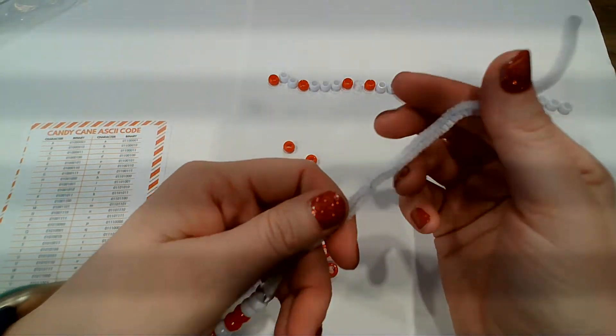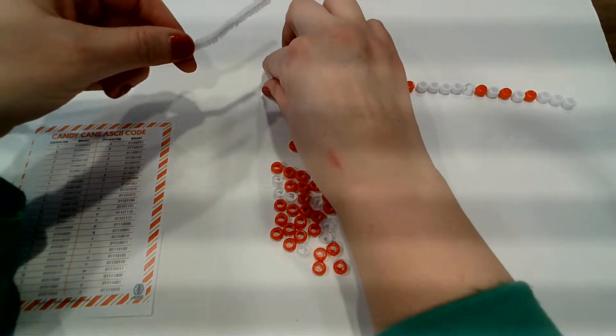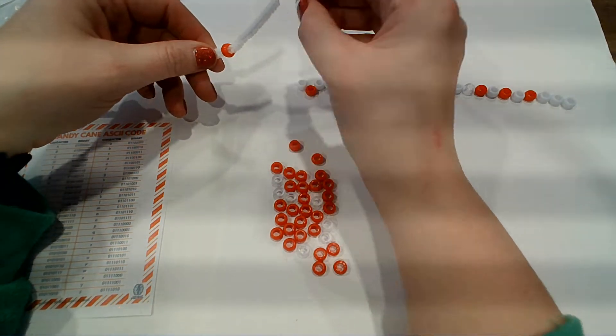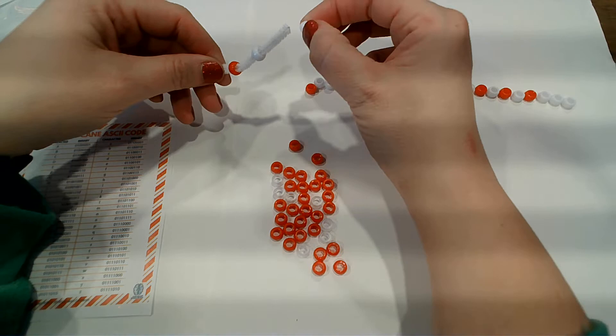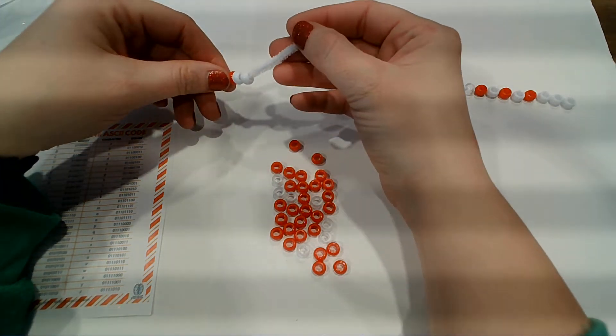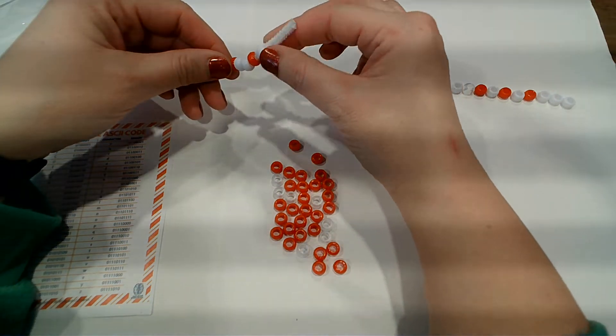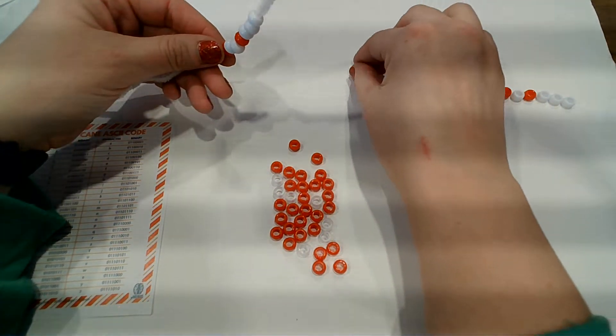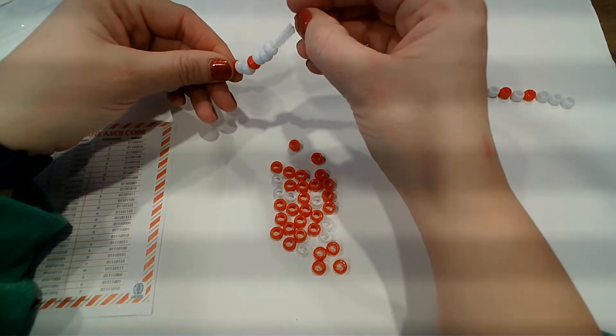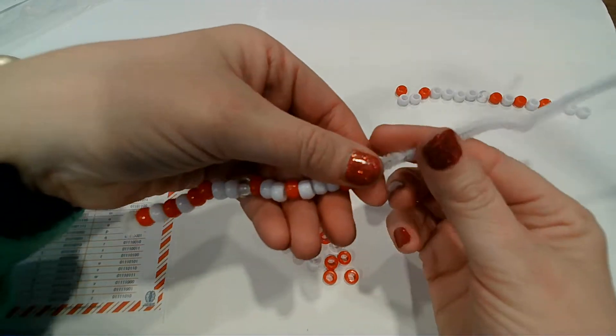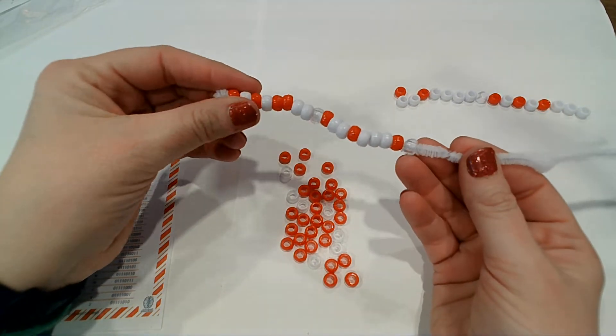We're going to go for the N, the lowercase N. Zero, one, one, zero, one, one, one, zero. And a space. So now we have S, N.